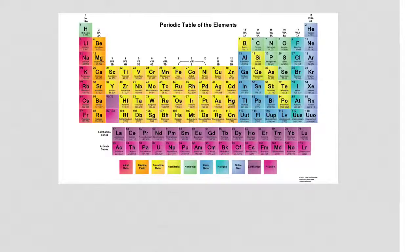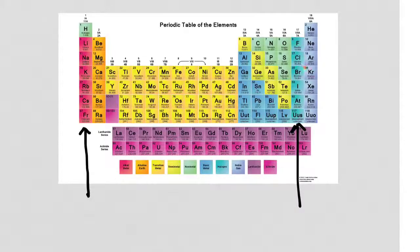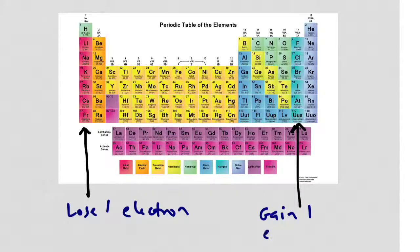Let's go back to the periodic table and see which columns tend to form ionic bonds. Because ionic bonds involve a transfer of just a couple of electrons, we tend to see them with elements in the far left column, which need to lose only one electron, and the column second from the right, which need to gain one electron. Because they satisfy the octet rule in complementary ways, these two columns tend to combine with one another frequently and form ionic bonds.